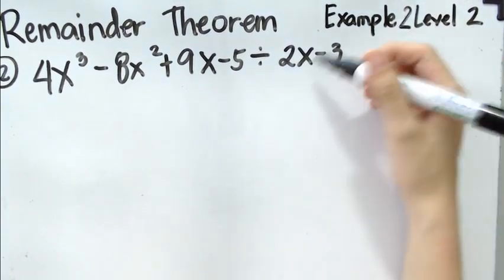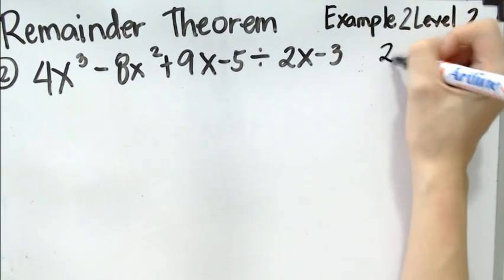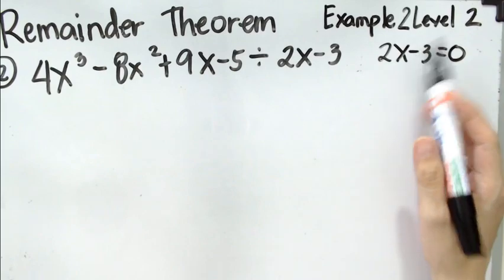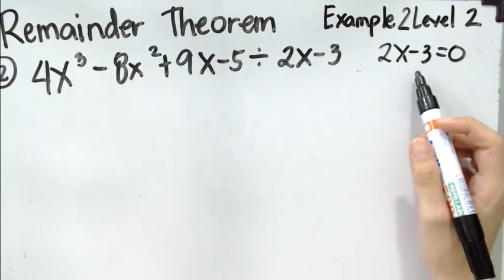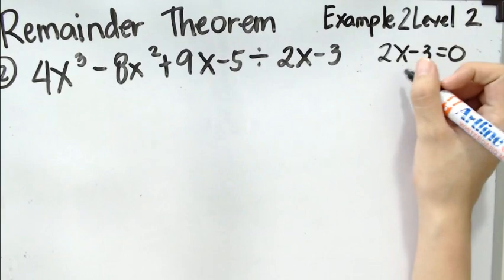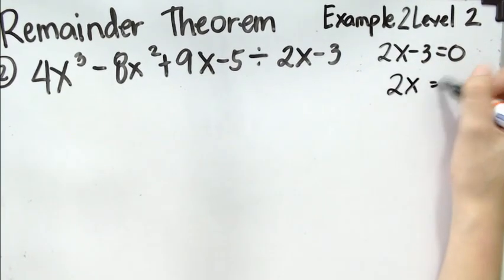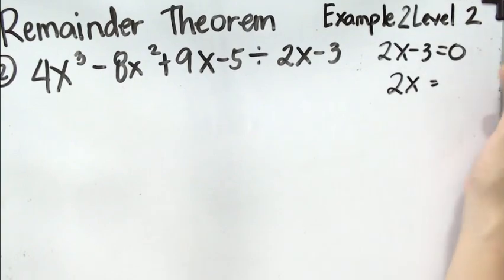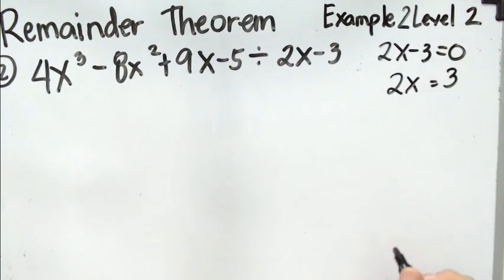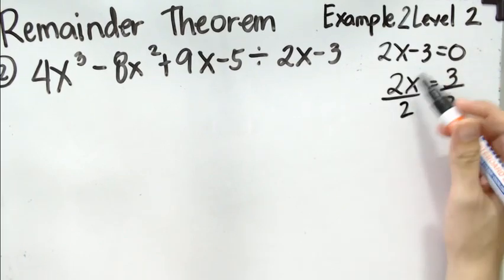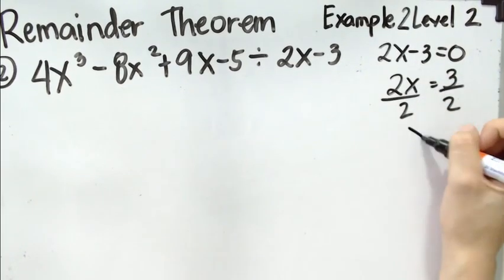First, we equate 2x minus 3 to 0. Next, we simply add both sides negative 3, positive 3, or simply transposing 3 to the other side. And then afterwards, we divide both sides by 2 so that we can isolate x.